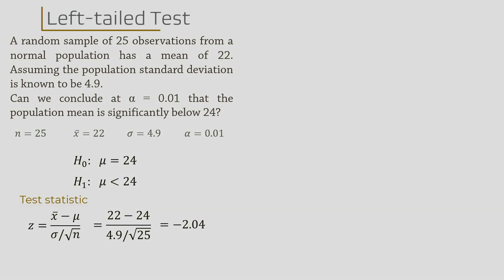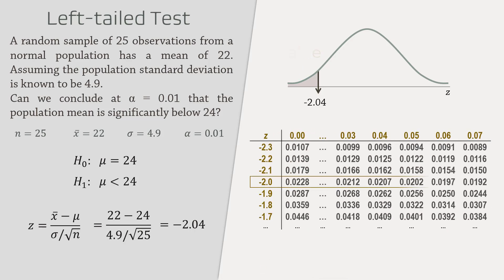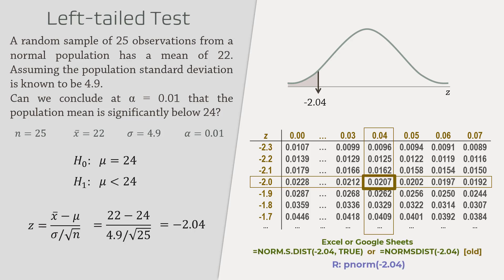This is a left-tail test — that is, a directional test with a less than sign in the alternative hypothesis. Therefore, the p-value will be the area under the curve to the left of the test statistic. From the less than z table, the area below z equals negative 2.04 is 0.0207, and that's the p-value.